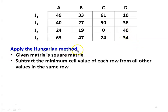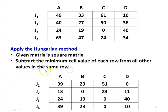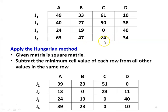Now apply the Hungarian method. The matrix is square. Subtract the minimum cell value of each row from all other values in that row. Row 1 minimum is 10: result 39, 23, 51, 0. Row 2 minimum is 27: result 13, 0, 23, 11. Row 3 minimum is 0: result 24, 19, 0, 40. Row 4 minimum is 24: result 39, 23, 0, 10. Each row now has at least one zero.